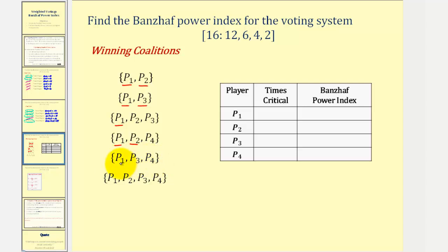Moving along to the winning coalition of players one, three, and four: if player one leaves, players three and four have a weight of six, which does not meet quota — player one is critical. If player three leaves, we're left with player one and player four with a combined weight of fourteen — does not meet quota, therefore player three is critical. If player four leaves, we have player one and three with a combined weight of sixteen, which is twelve plus four, and does still meet quota — so player four is not critical.